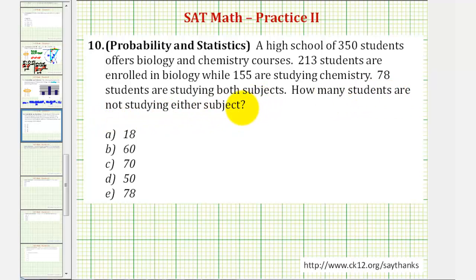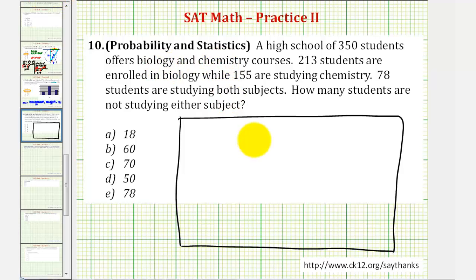To solve this we'll use a Venn diagram where the sample set will be all the students in the school. All 350 students will belong in this set. Within this set we have students taking biology, chemistry, or both. This set will be the students taking biology and this set will be the students taking chemistry. These sets do have to overlap because some students are taking both subjects.